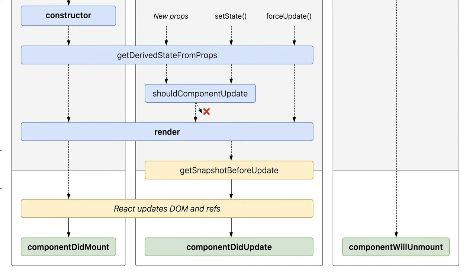getSnapshotBeforeUpdate can calculate: okay, after adding this new message from my friend, my chat list will become full and I just need to add a scroll height or some property so that this content is scrollable and the latest content appears. getSnapshotBeforeUpdate is called right after the render method is called. It will return some value which will be used by componentDidUpdate. It refers to the value just before the DOM is updated — even though render has happened, the actual changes have not been applied yet.